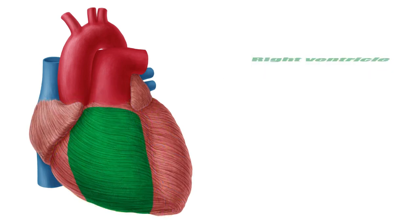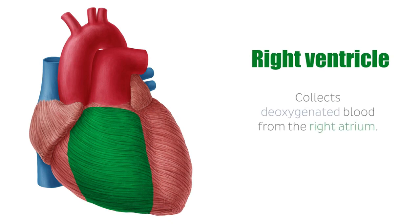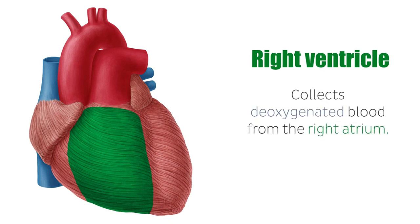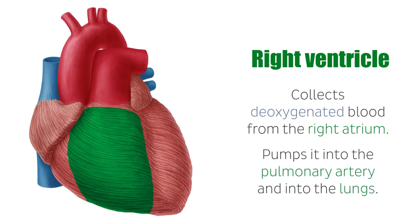The right ventricle collects deoxygenated blood from the right atrium as the tricuspid valve relaxes, and pumps it via rhythmic contractions through the pulmonary valve in its roof and into the pulmonary trunk, which passes the blood into the pulmonary artery and into the lungs.